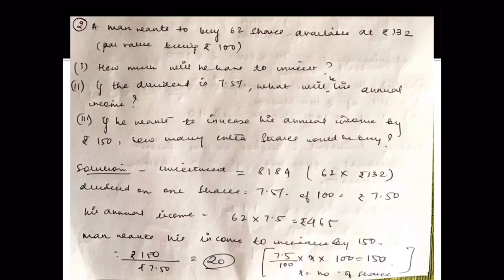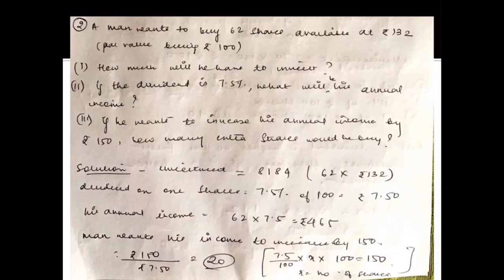If he wants to increase his annual income by rupees 150, how many extra shares would he have to buy? We know the extra income needed is rupees 150, the rate of dividend, and the face value — so we only need to find the number of shares. Using the dividend formula: 7.5 percent into 100 into x equals 150, solving gives x equals 20. So the man will have to buy 20 more shares to increase his annual income by 150.